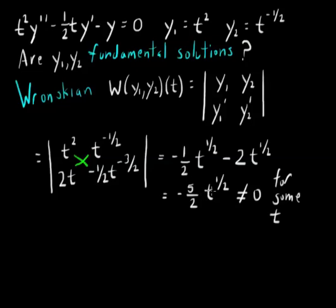In other words, there's some T value. In fact, every T value that's positive and non-zero will make this non-zero. Because of that, as long as we're able to say that, we can conclude the following.